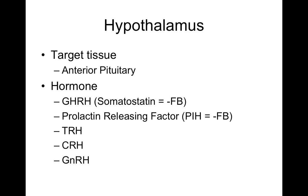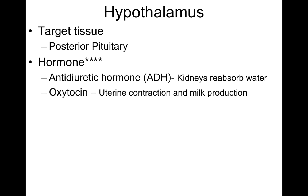There's a diagram in your textbook on page 501 that you should become very familiar with. That diagram shows what hormones are being released from the hypothalamus and what they're causing the anterior pituitary to do. That is a great diagram to look at, memorize, and try to understand.